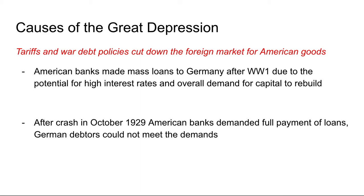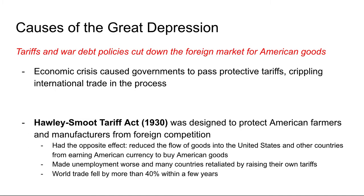When the stock market crashed in October 1929, American banks — worried because of a run on money and fear about the future — demanded full repayment of those loans. However, the Depression was not just centered in the United States; it was a global event. Those German debtors could not meet the demand. As a result, the U.S. government and financial industry collaborated to pass protective tariffs intended to protect American industries, goods, banks, and manufacturing. But by making the barrier to entry so high for foreign companies and investments, they disabled international trade. A big example was the Hawley-Smoot Tariff Act of 1930, meant to protect American farmers and manufacturers from foreign competition.